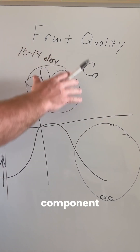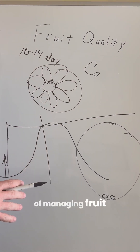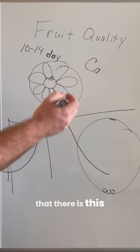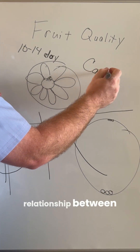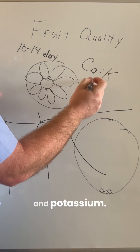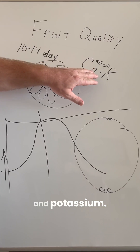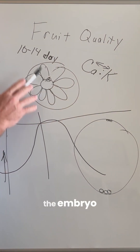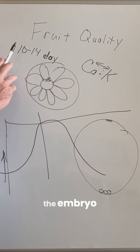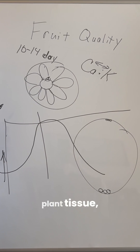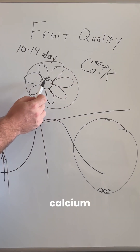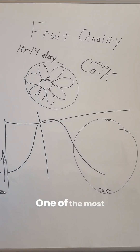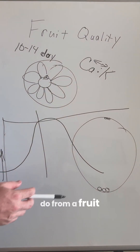The next component of managing fruit quality is recognizing and understanding that there is an antagonistic relationship between calcium and potassium. When you have an excess of potassium supply in the embryo or in the plant tissue, it will prevent calcium from moving into the developing embryo in adequate amounts.